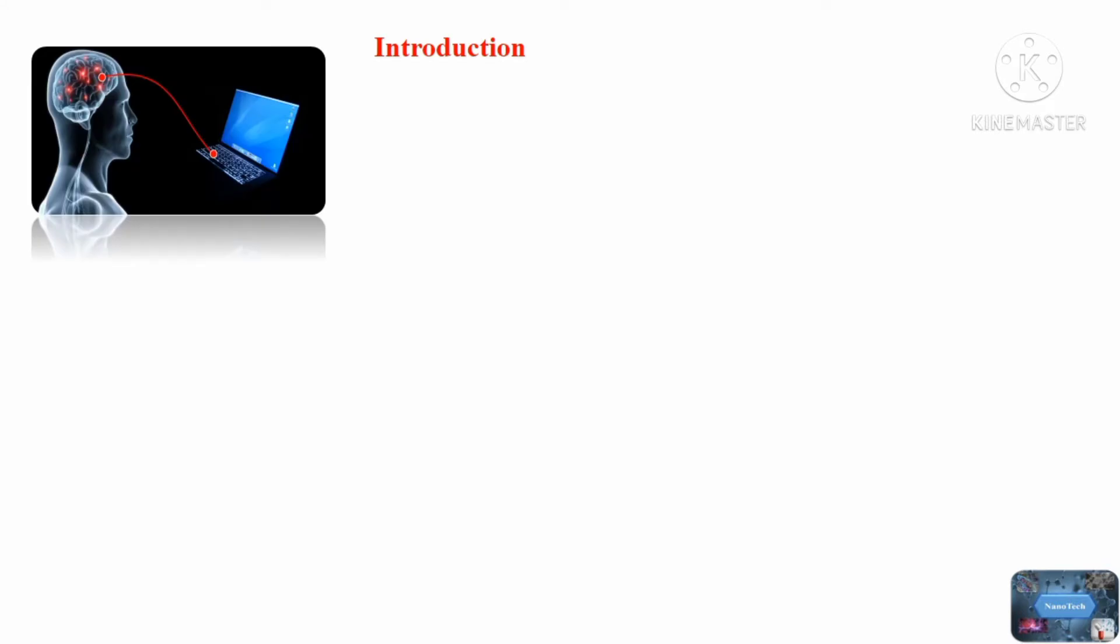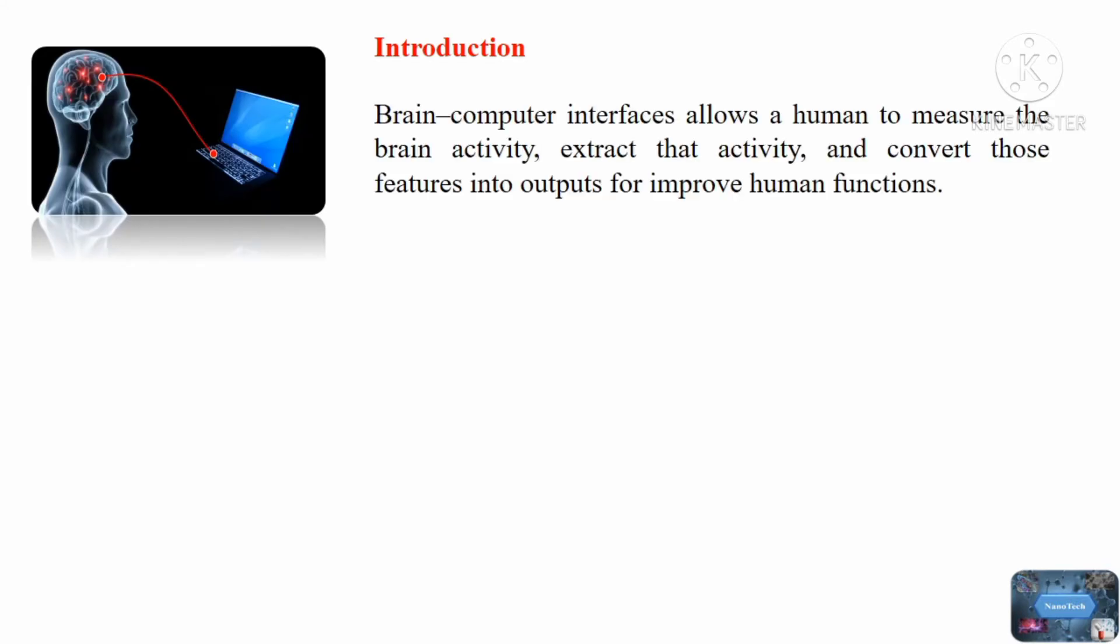What is Brain-Computer Interface? Basically, a brain-computer interface is a system that measures activity of the central nervous system and converts it into artificial output that replaces, restores, enhances, supplements, or improves natural central nervous system outputs.